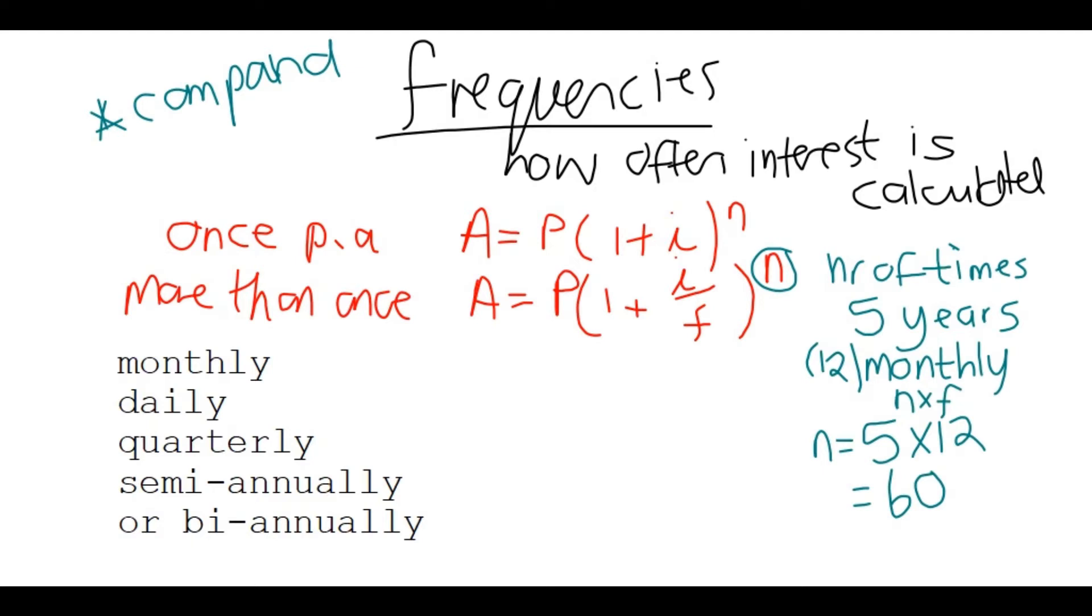Now let's talk about these frequencies. So in the place of F, if it's monthly, you'll put 12. Daily, 365. Quarterly, 4, because there are 4 quarters in a year. And then semi-annually, or sometimes they'll also say bi-annually, 2, because remember, there are 2 halves in a year. Just remember that, it's like 2 halves in a whole.